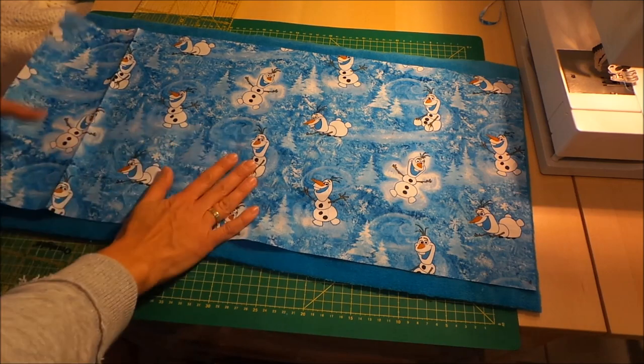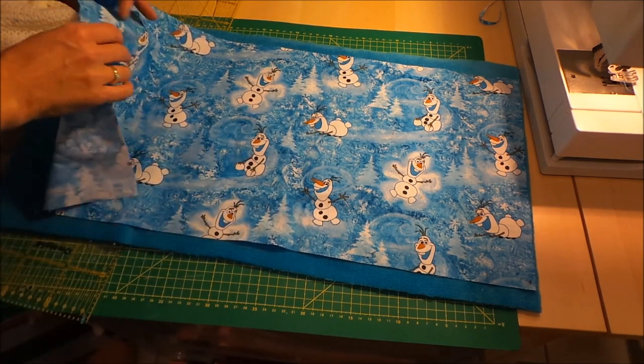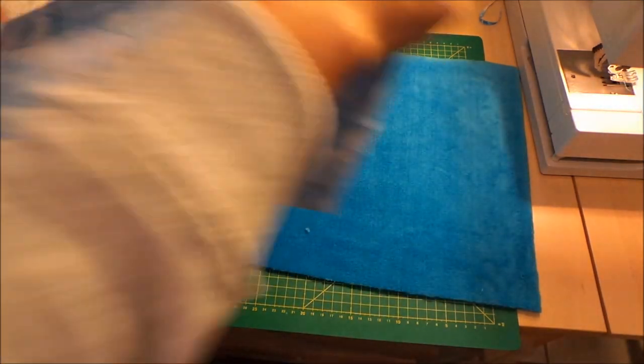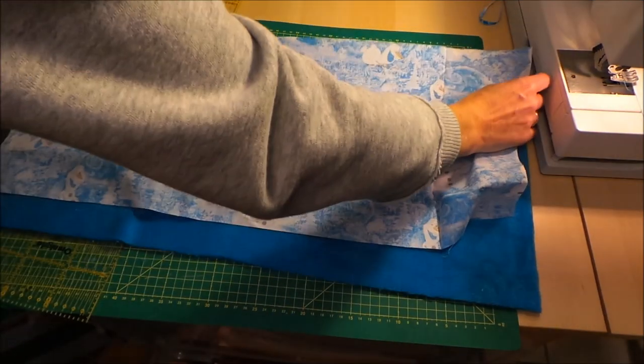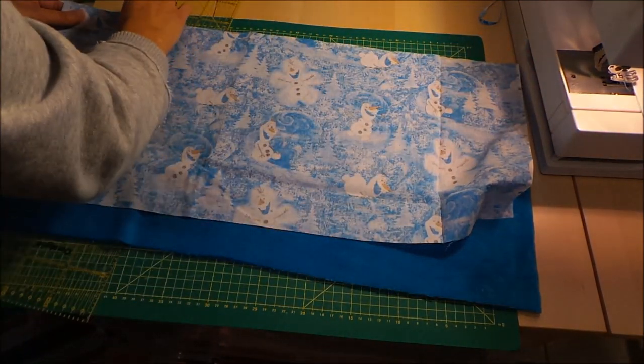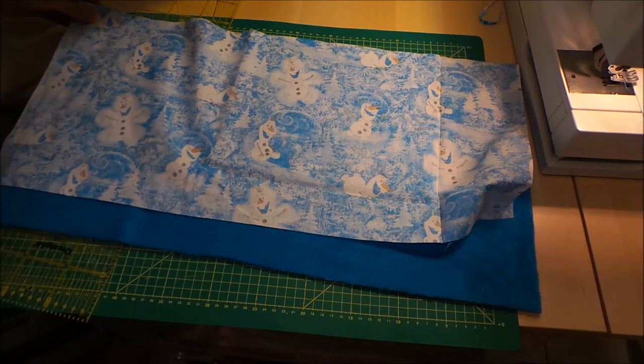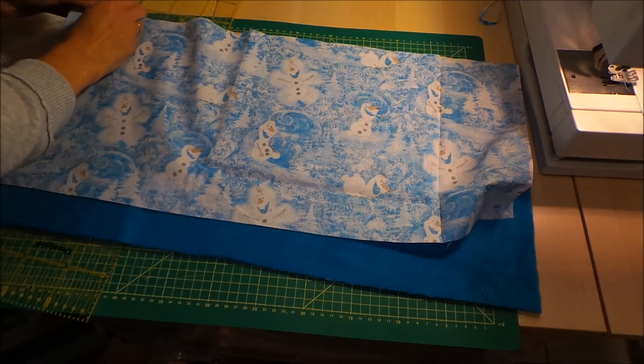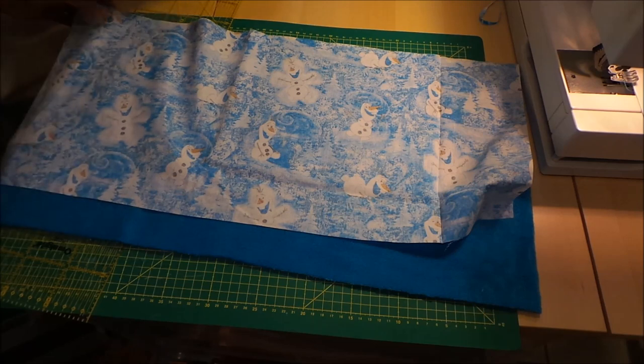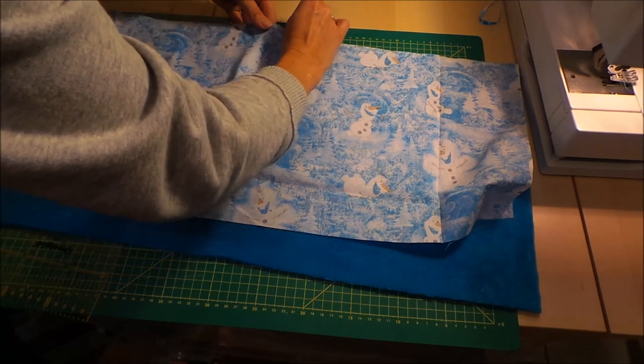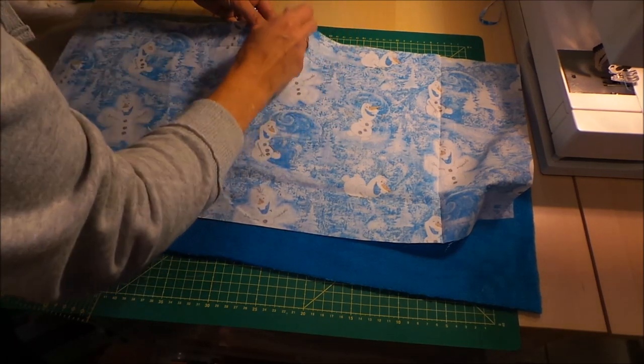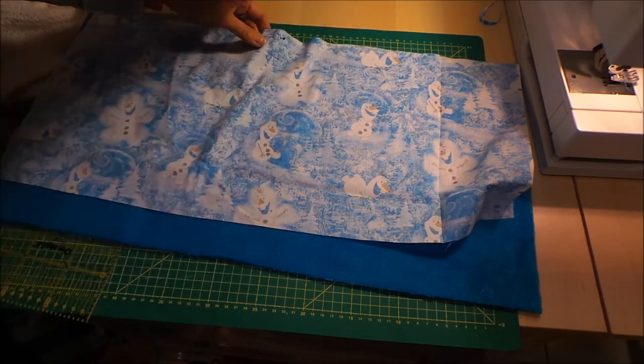So now we turn the two, I've prepared these, we turn the fabrics around so that the right sides are facing each other and I pin the bottom and the top together. So we sew the infinity scarf lengthwise first.